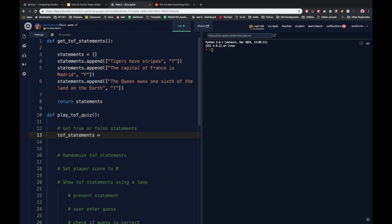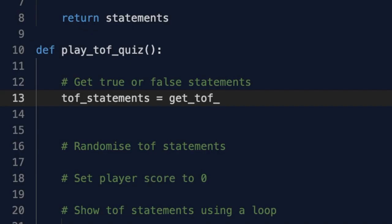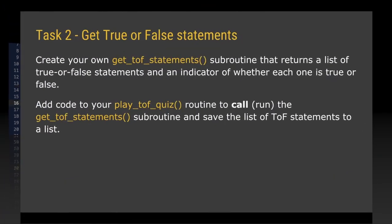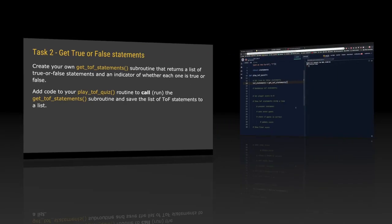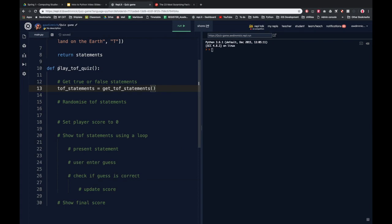For task two, create your own get_tof_statements subroutine that returns a list of true or false statements, each with an indicator of whether it's true or false. You will then need to add code to your play_tof_quiz routine to call the get_tof_statements subroutine and save the list of true or false statements to a variable.